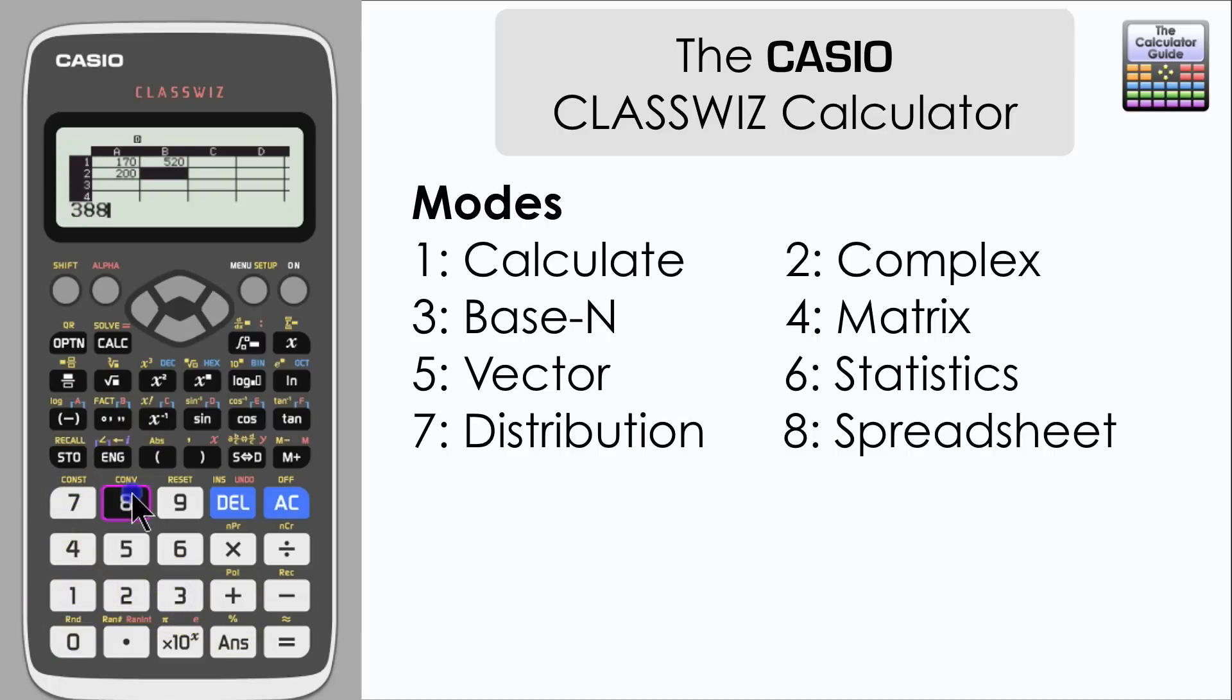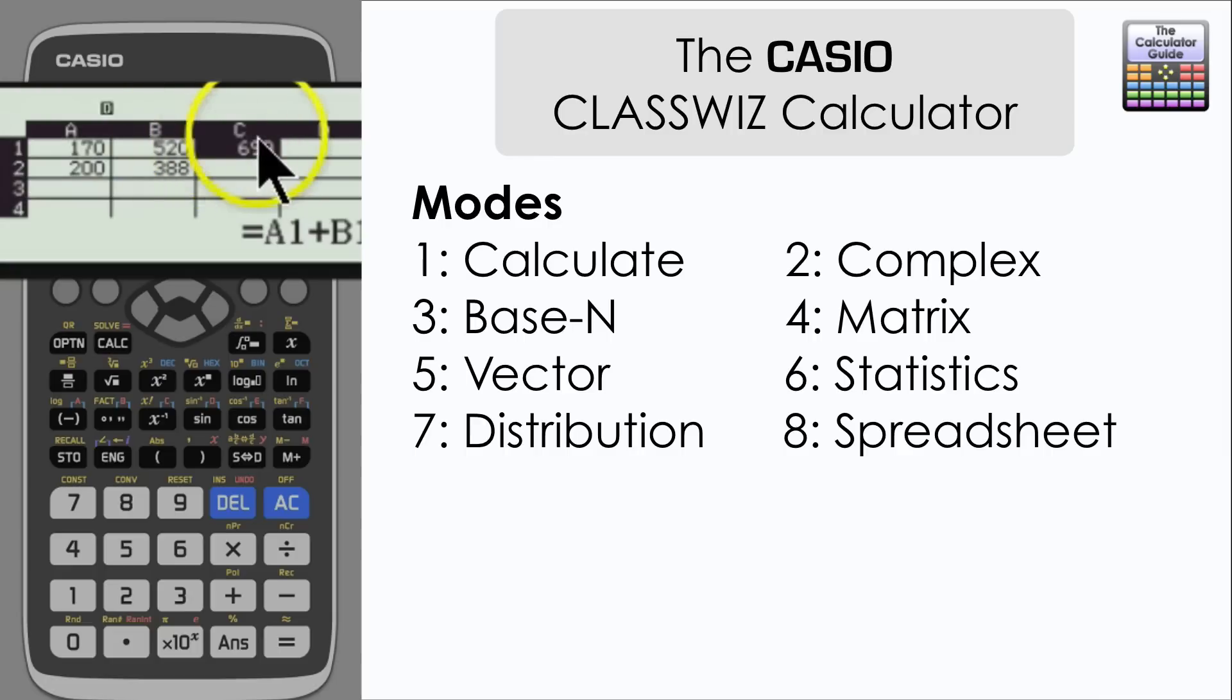Once I've inputted my values here, what I can do is to click on an empty cell here and very similar to other spreadsheet programs that you're familiar with, we can write a formula in a particular cell related to the information that we've already inputted. So I'm going to put in here equals A1 plus B1 and that's going into just C1 there. And here we can see that the calculator has added the values from A1 and B1 into cell C1.